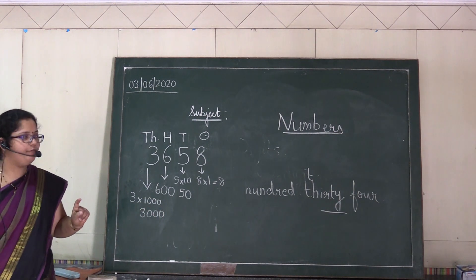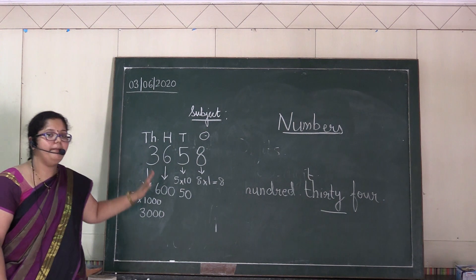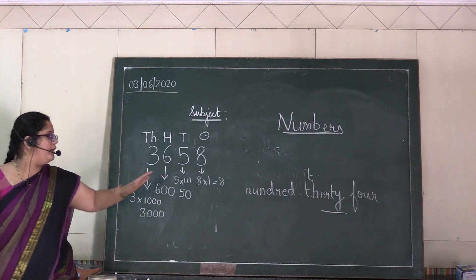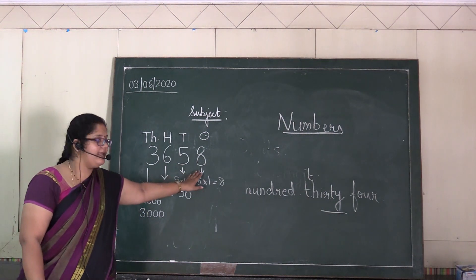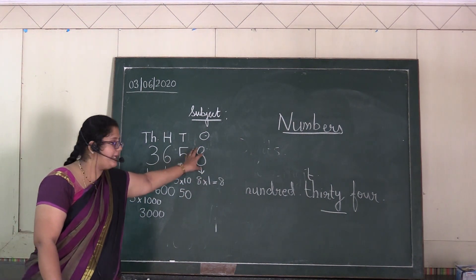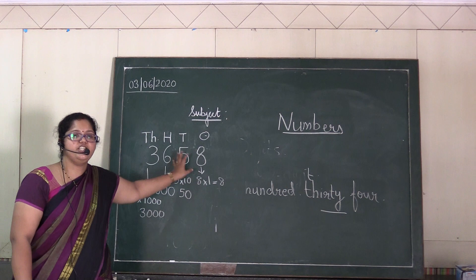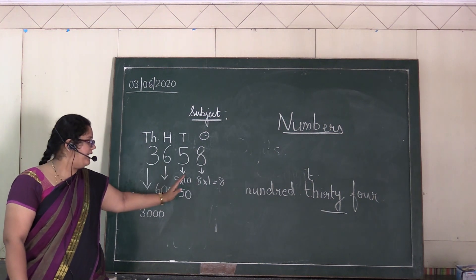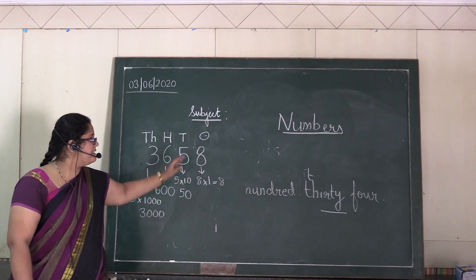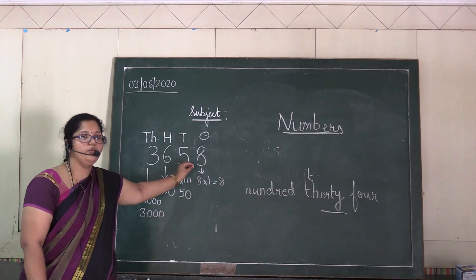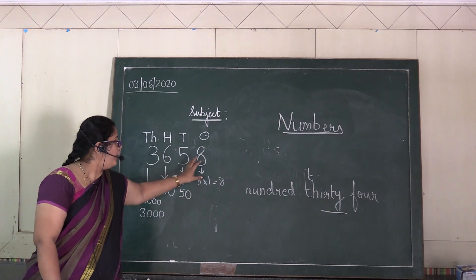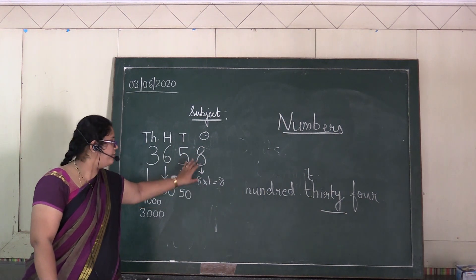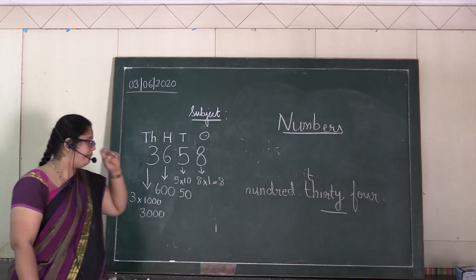So, don't get confused between places and place value. Places refers to which place each digit is in, and place value is the value of that digit according to its place.